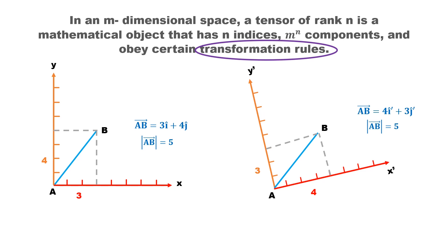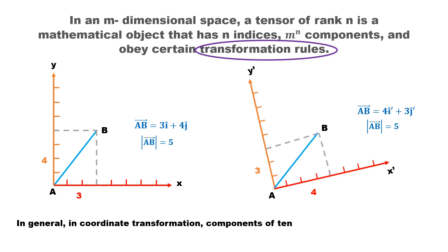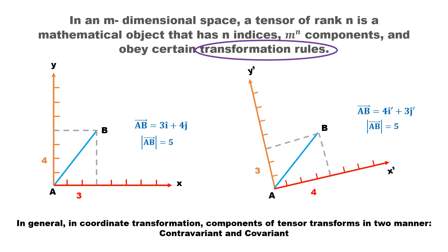But the components and basis vectors of the tensor are not invariant — they also change when the coordinate system changes. In general terms, when the coordinate system changes, the component of the tensor can change in two different ways: in a contravariant manner or a covariant manner.